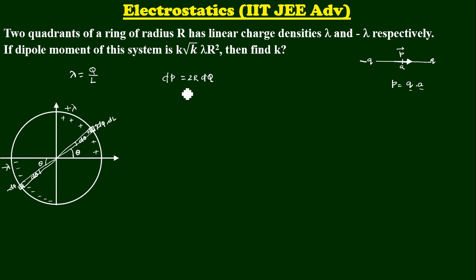So lambda is a uniform, uniformly charge distribution for that small charge by its small length. Let me say DL. Okay. Can I say this as a DQ is equal to lambda DL. Now, what is this DL by the way? DL is a kind of an arc which is subtending an angle D theta.